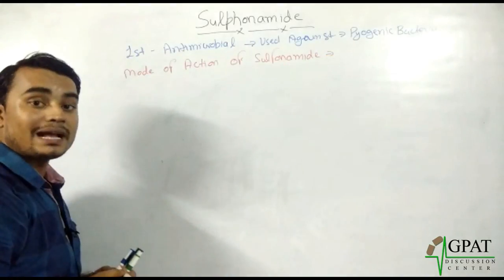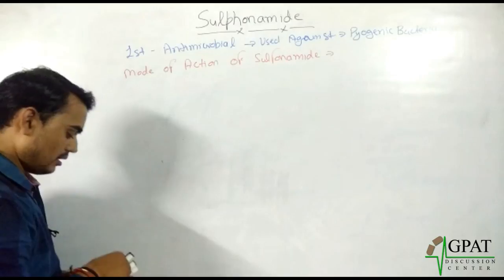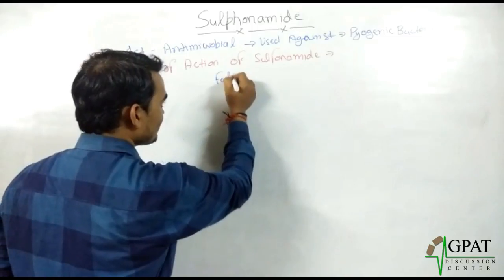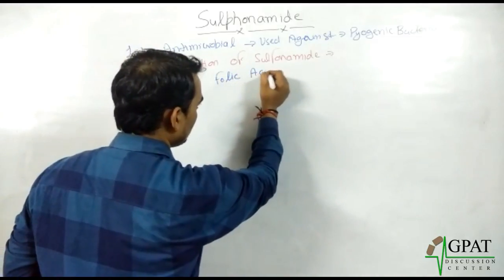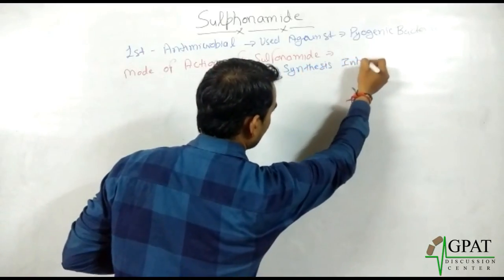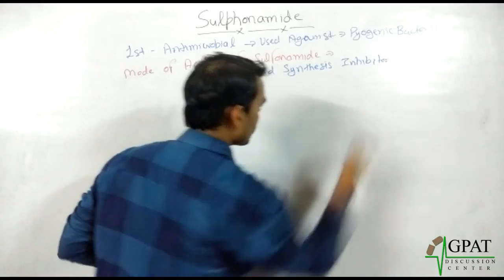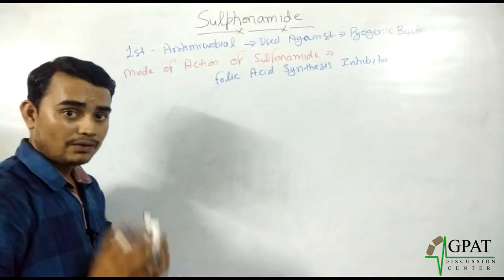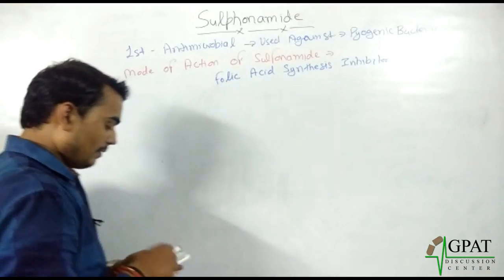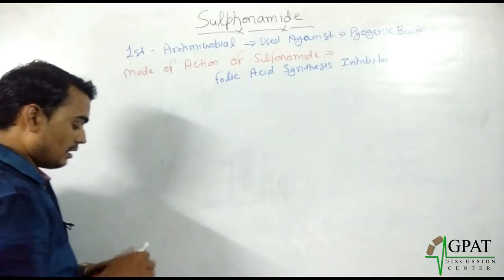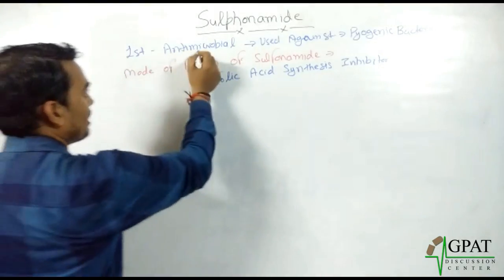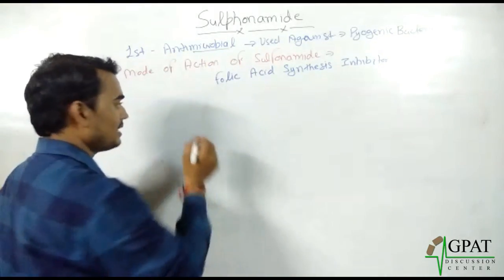The mode of action of sulfonamide: sulfonamide is a folic acid synthesis inhibitor. To understand this mode of action, we first need to learn how folic acid is synthesized — not in our body, but in the body of microorganisms.